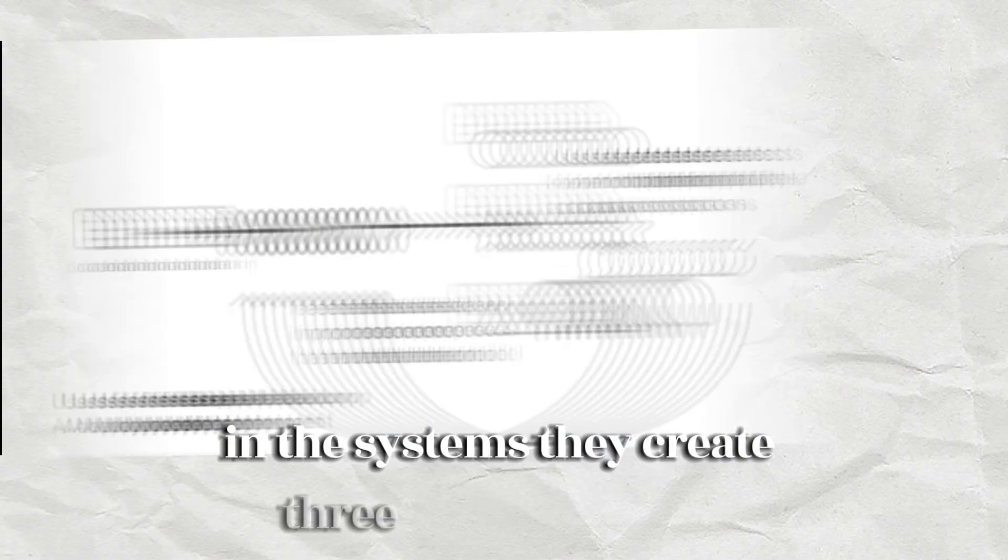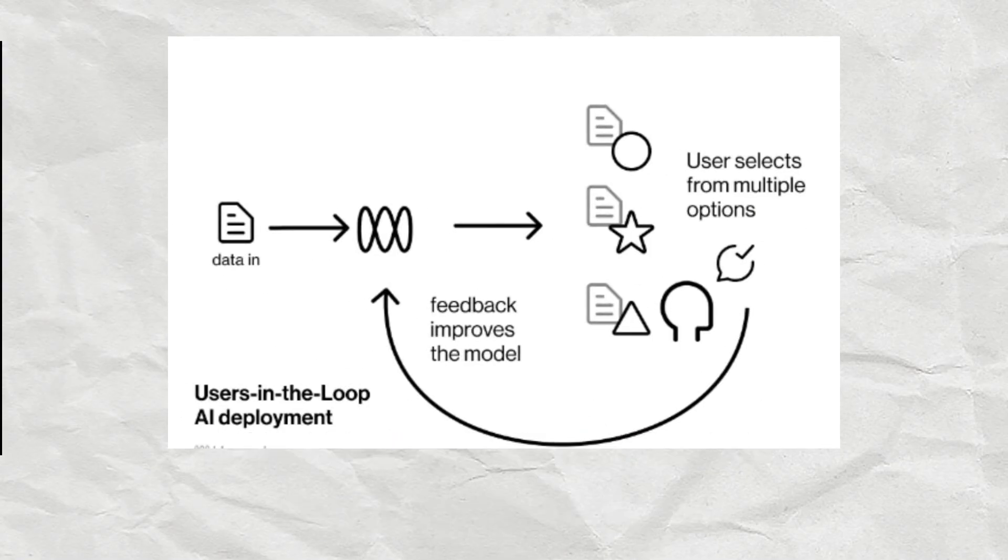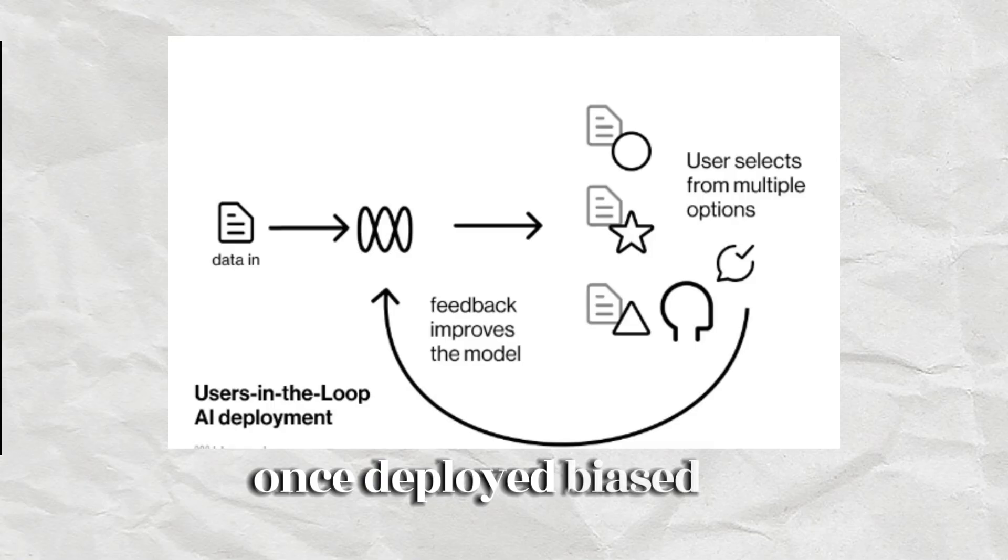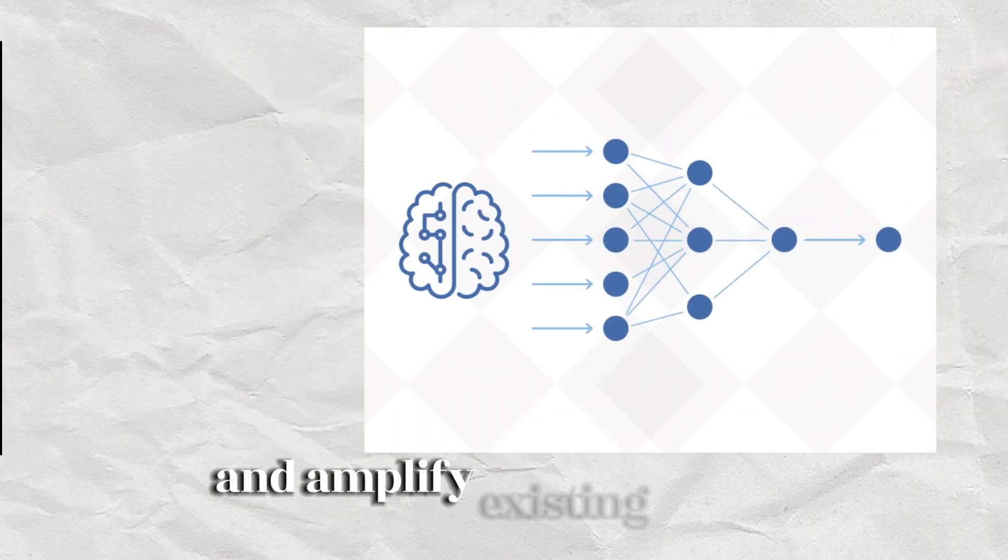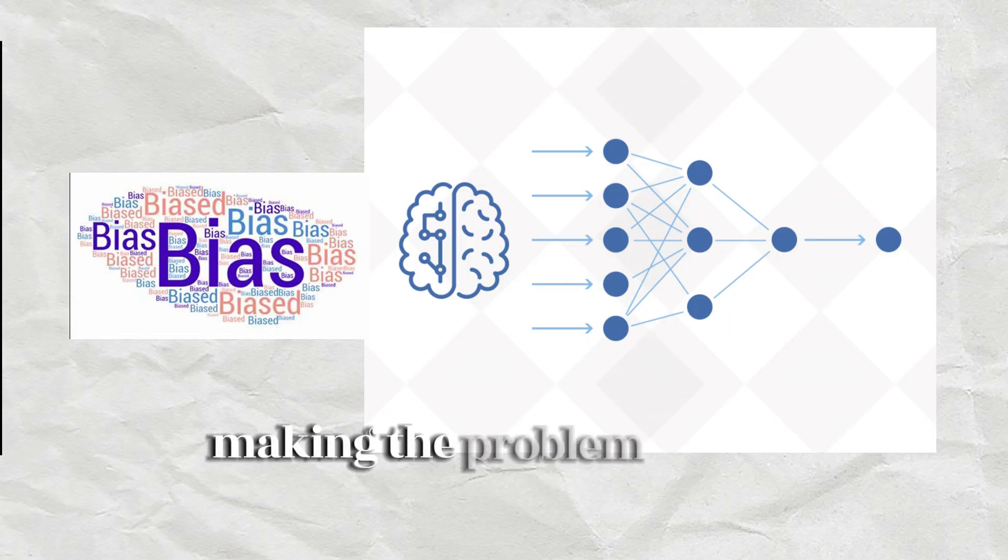Feedback loops: Once deployed, biased AI systems can create feedback loops that reinforce and amplify existing biases, making the problem worse over time.